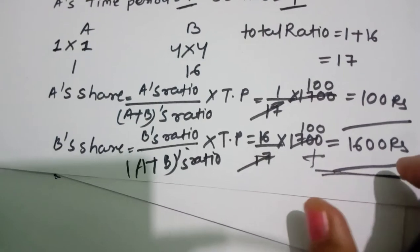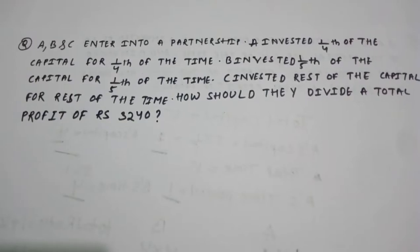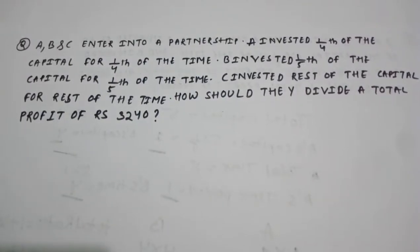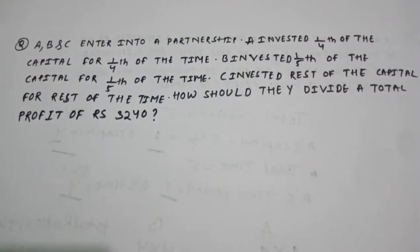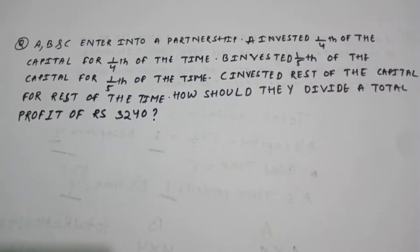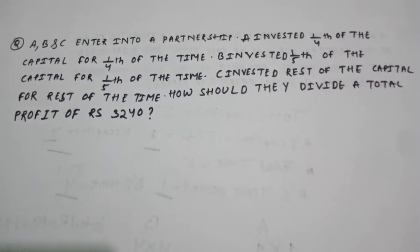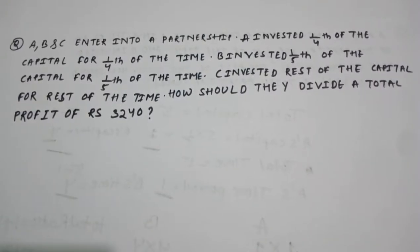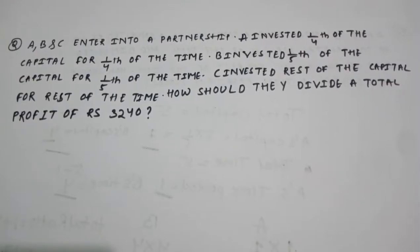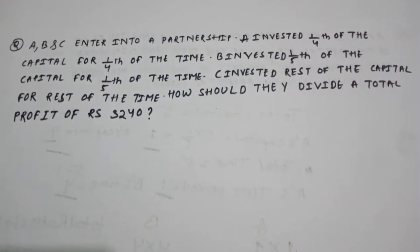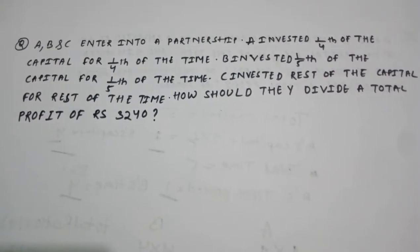Let's take another example with A, B, and C. According to the question, A, B, and C enter into a partnership. A invested 1/4th of the capital for 1/4th of the time. B invested 1/5th of the capital for 1/5th of the time. C invested the rest of the capital for the rest of the time. How should they divide a total profit of rupees 3240?